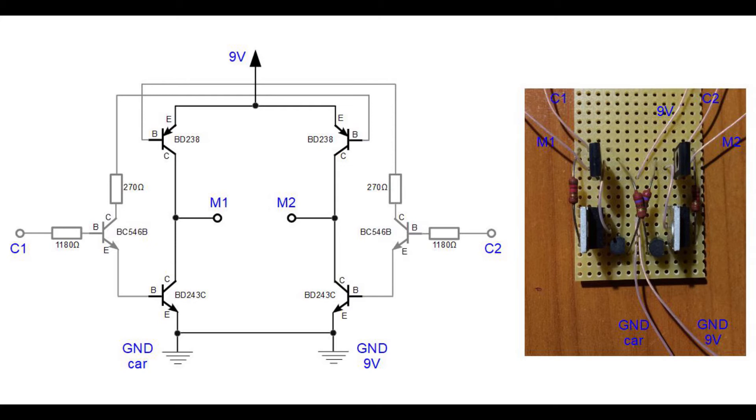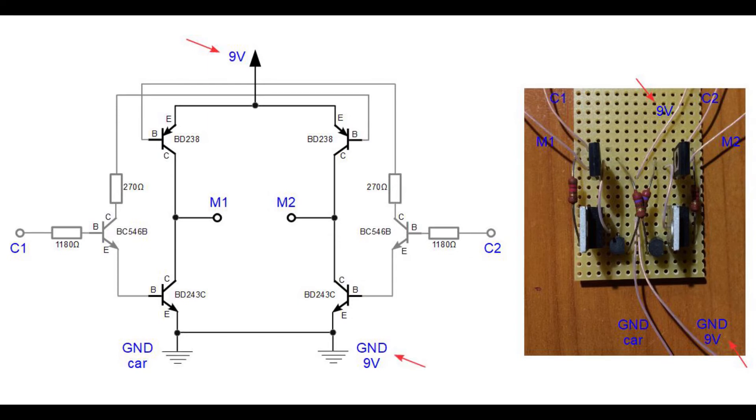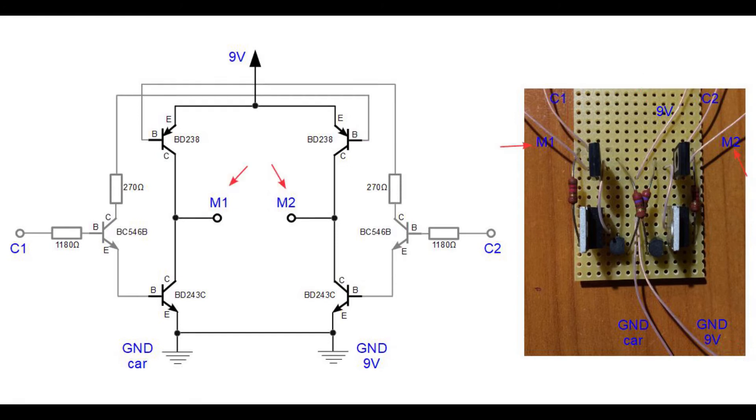If we are looking at our circuit board, there are seven wires coming from it right now. The 9V wire connects to the plus of our 9V battery and the GND 9V wire connects to the minus of that battery. Wires M1 and M2 are connected to the electric motor. Wires C1 and C2 are connected to the control pins of the microcontroller unit, and the GND car wire is connected to the remote control car's ground.